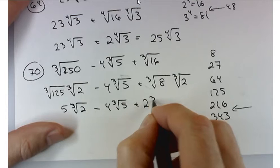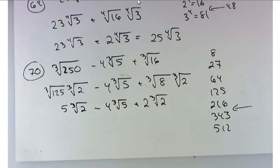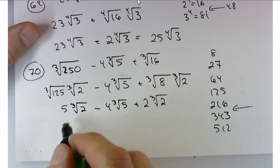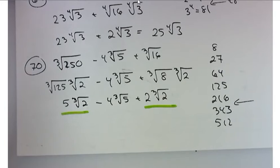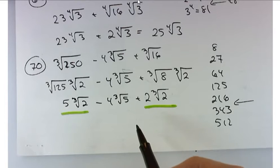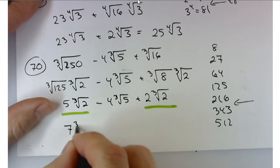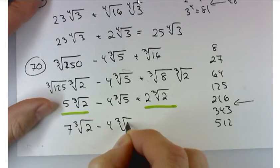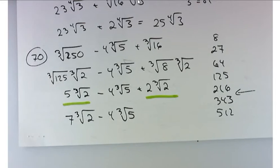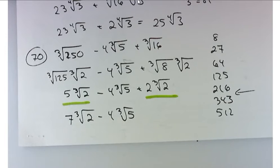Are these all like terms? No. Which ones can I add? First one and the third one, those are like terms. When I combine these, what would I get? Seven cube roots of two minus four times the cube root of five, and that's it. Cube root of two and cube root of five are not like terms. You can't go any farther. You can't subtract the coefficients. You can't combine the radicals. That's it, done with that one.